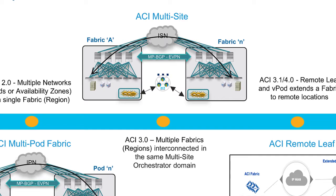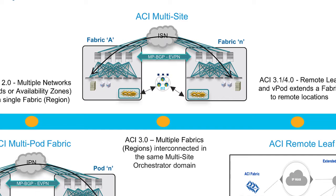With ACI Release 3.0, we delivered a second architecture called ACI Multisite, which is the main focus of this training. It allows interconnecting different fabrics, different APIC domains. These ACI networks not only represent different network fault domains, but are also different management domains. Each ACI network has its own APIC domain controller, and an ACI Multisite Orchestrator is introduced to manage all these different APIC domains from a common pane of glass.